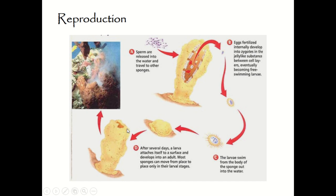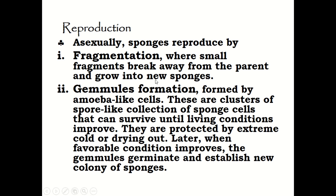For asexual reproduction, sponges reproduce through two ways: fragmentation or gemmule formation. Through fragmentation, small fragments of sponge break away from the parent and grow into new sponges. For gemmule formation, amoebocytes form clusters of spore-like collections of sponge cells that can survive until living conditions improve, being protected from extreme cold and drying out. When favorable conditions return, the gemmules germinate and establish a new colony.